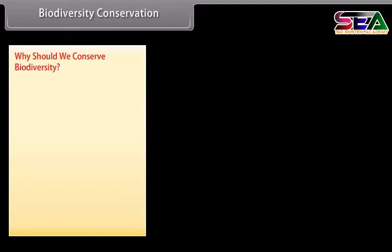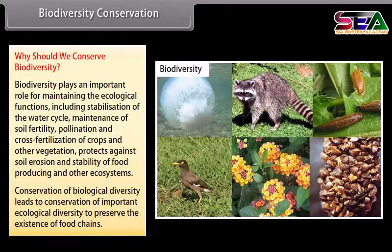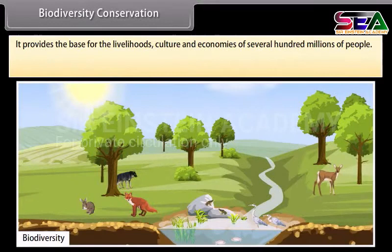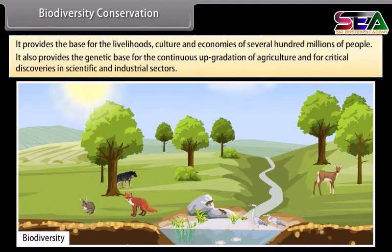Biodiversity Conservation — Why should we conserve biodiversity? Biodiversity plays an important role in maintaining ecological functions including stabilization of the water cycle, maintenance of soil fertility, pollination and cross-fertilization of crops and other vegetation, protection against soil erosion, and stability of food-producing ecosystems. Conservation of biological diversity preserves the existence of food chains, provides the base for livelihoods, culture, and economies of hundreds of millions of people, and provides the genetic base for continuous upgradation of agriculture and critical discoveries in scientific and industrial sectors.